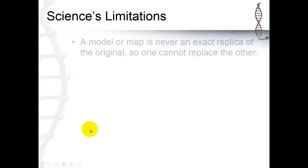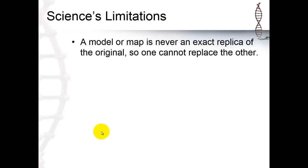And that's where the limitations come in. Science creates a model or a map of the original. It's never the real thing. It's a replica. So don't replace the real thing with the replica. It's a surrogate for the real thing.